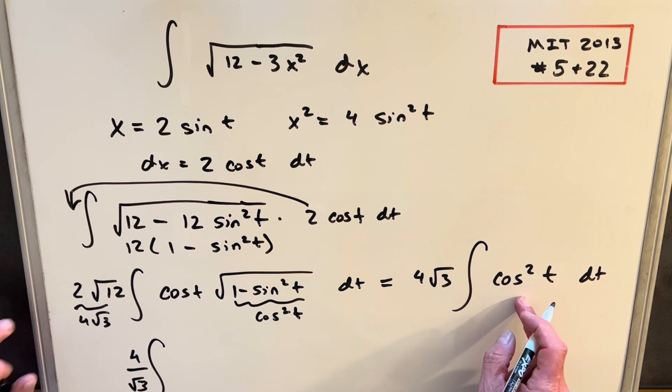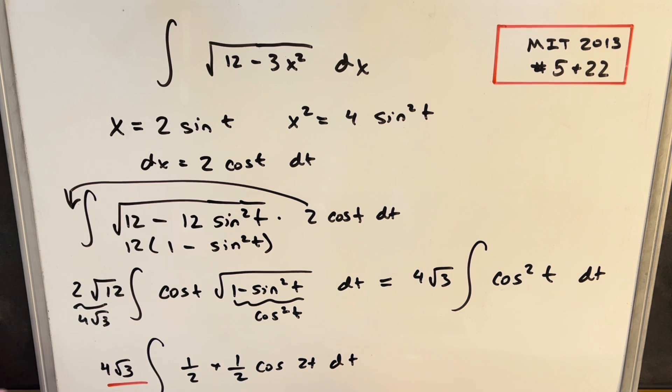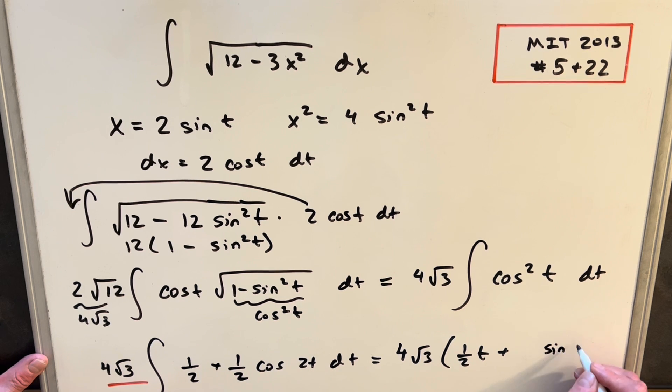But now we can use the power reduction formula on this cosine squared t, and we can write this as half plus half cosine of 2t. Okay, now we're ready to integrate this thing. So we'll have our 4 square root of 3 in front. Then we're going to have integral half is going to be half t. Integral of cos 2t is going to be sine 2t. But then we'll take our 2 out in the denominator, so we're going to have half times half, so we're going to have a 1 fourth in front here.